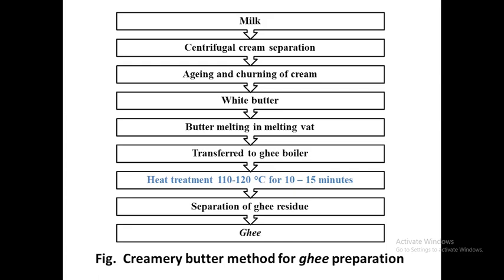The creamery butter method is a modification of the direct cream method. Here, cream is aged and churned to obtain white butter, which is then transferred to the ghee boiler where it is melted. In the ghee boiler, the same heat treatment — approximately 110–115°C for 10–15 minutes — is applied, followed by separation of ghee residue, just as in the direct cream method.